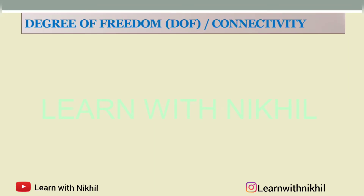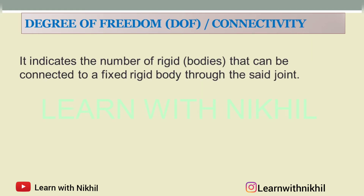We'll start with degree of freedom, also called as connectivity. It indicates the number of rigid bodies that can be connected to a fixed rigid body through a said joint. As we studied earlier, you have the input link and the output link connected by a joint, so if there is one joint there will be one degree of freedom.